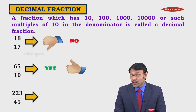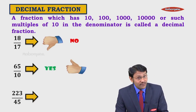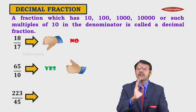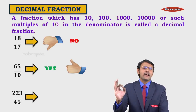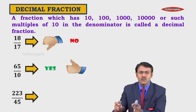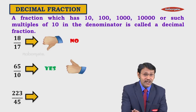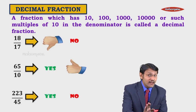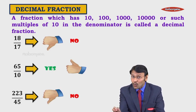One more example: 223 upon 45. The denominator should only be 10, 100, 1000, 10,000 and so on. The denominator here is 45, so is it a decimal fraction? The answer is no. What about 2 upon 70? No — because the denominator should be only 10, 100, 1000 and so on.